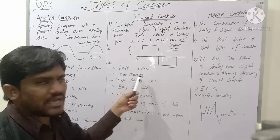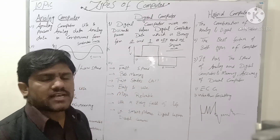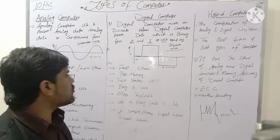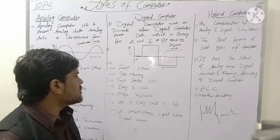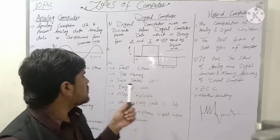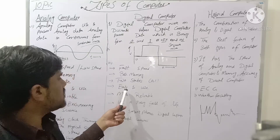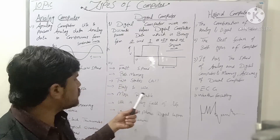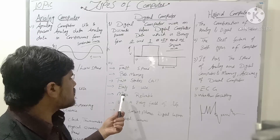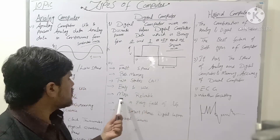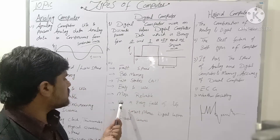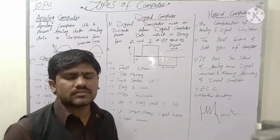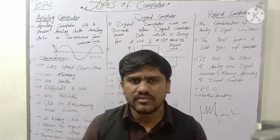The characteristics of a digital computer are: it is the fastest speed computer, it has big memory, it has two states — zero and one — it is easy to use, it is more reliable, and it is used in every field of life.